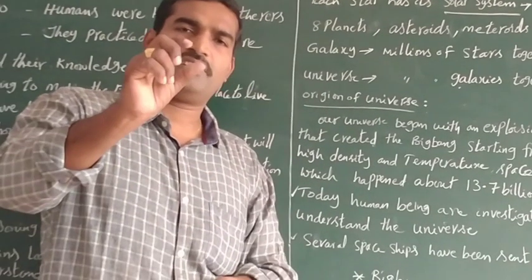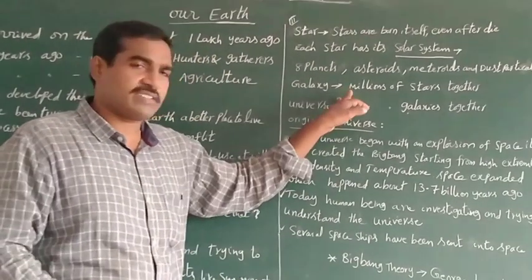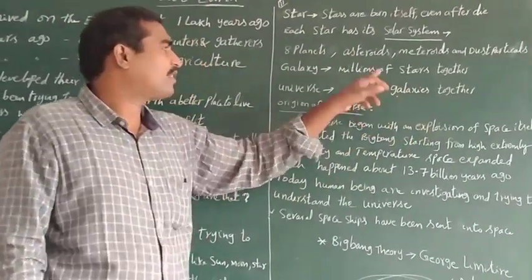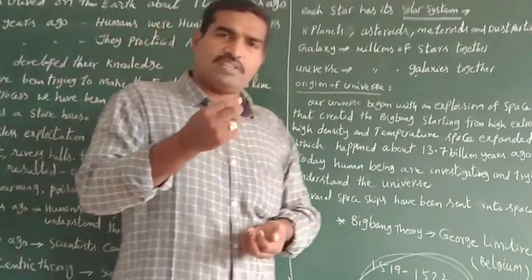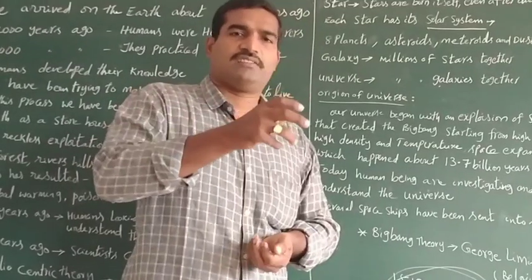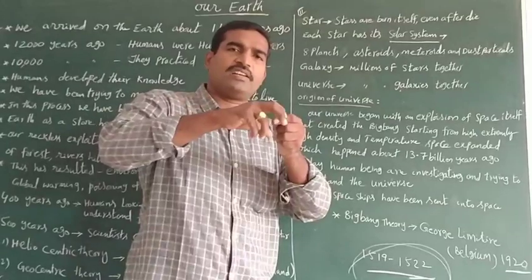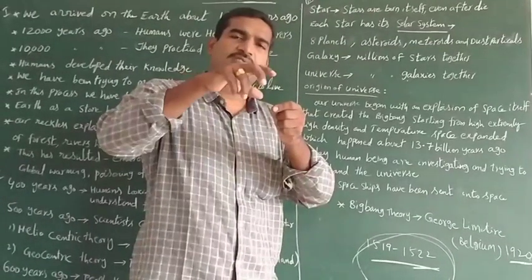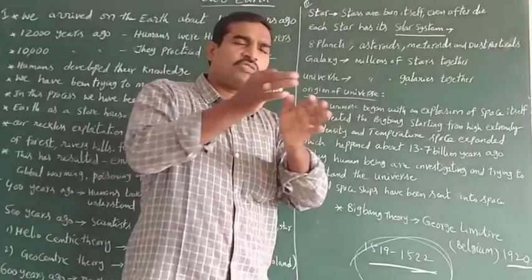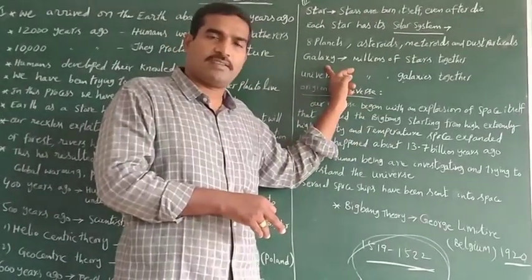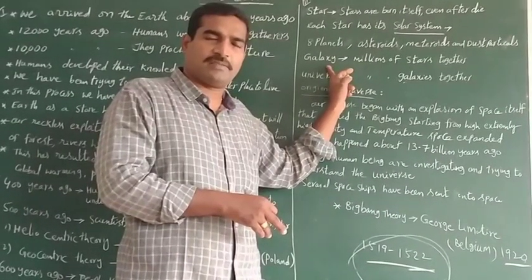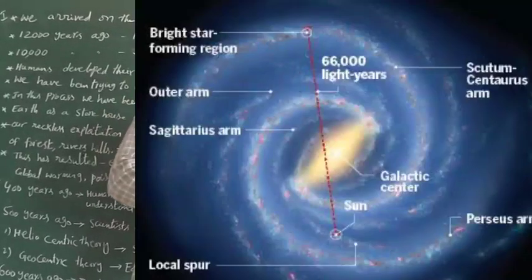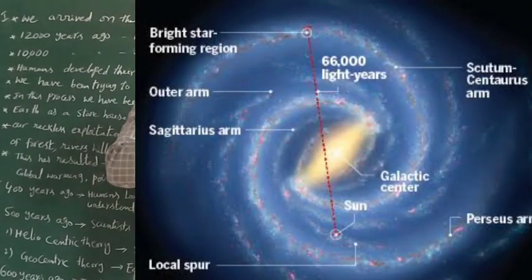Now we will discuss about a galaxy. What is a galaxy? Millions of stars together are known as a galaxy. Our sun has its own solar system; similarly, millions of stars each have their own solar systems, and all together they are called a galaxy. The galaxy in which we live on Earth is the Milky Way.